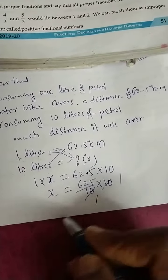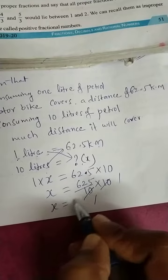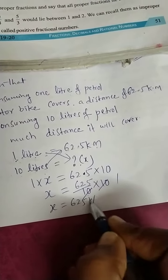10 ones are 10 ones are... will get cancelled. Now x is equal to 625 km.